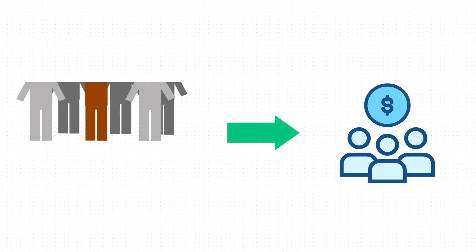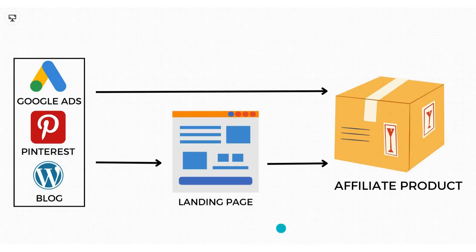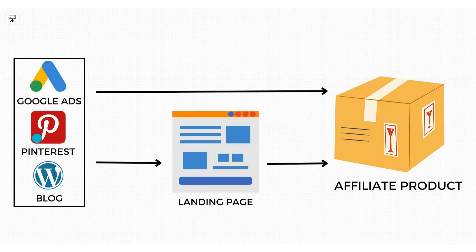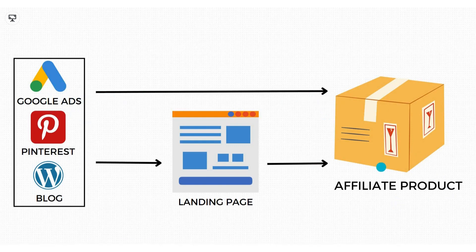Now let's talk about what mistakes people make while promoting affiliate products. This is the first mistake: on the left side you can see the traffic sources. For example, you are running Google Ads to drive traffic, or you have a Pinterest page, or you can have a blog — it can be any traffic source. Once you have the traffic, in the first case, you are sending them directly to your affiliate product.